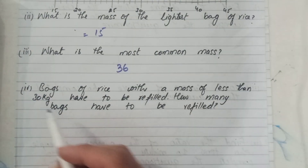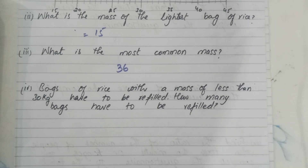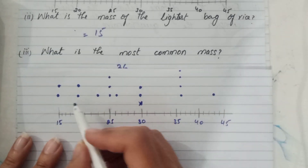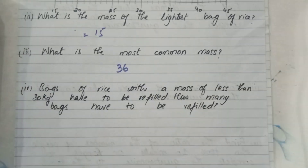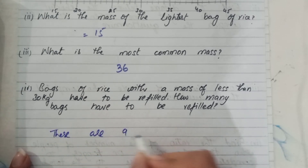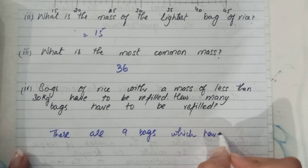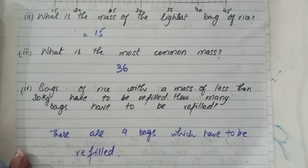Part four: bags of rice with a mass of less than 30 kg have to be refilled — how many bags have to be refilled? We observe from the dot diagram how many bags have a mass less than 30. Counting: 1, 2, 3, 4, 5, 6, 7, 8, 9 — these are nine bags which are less than 30 and have to be refilled.